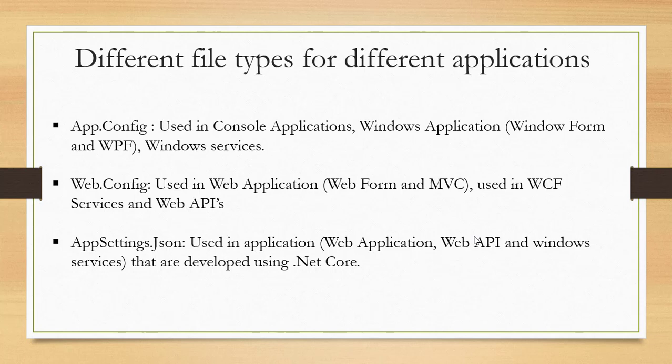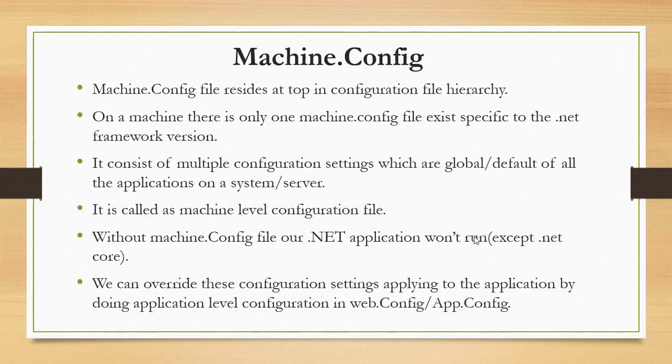machine.config resides at the top of the configuration file level hierarchy — it is the root-level file for all configuration on a machine. There will be only one machine.config file for each specific .NET Framework version; there cannot be two files for a single version.